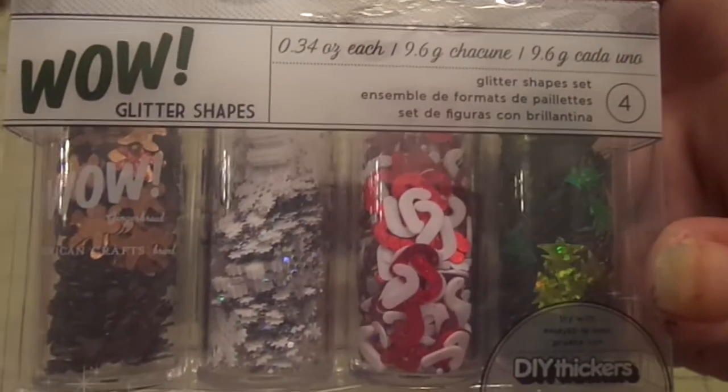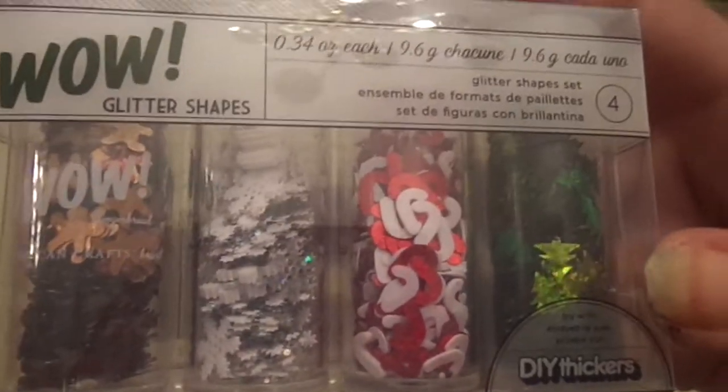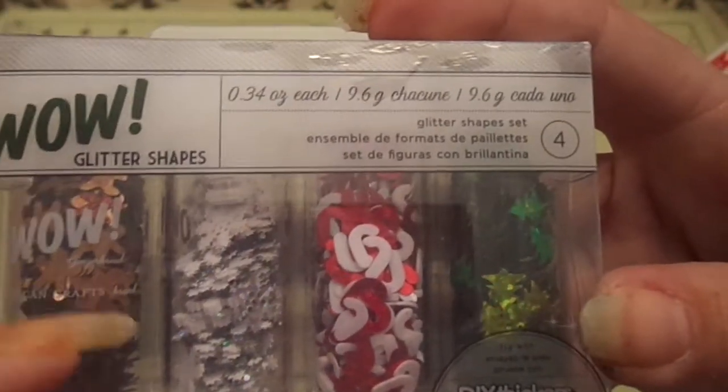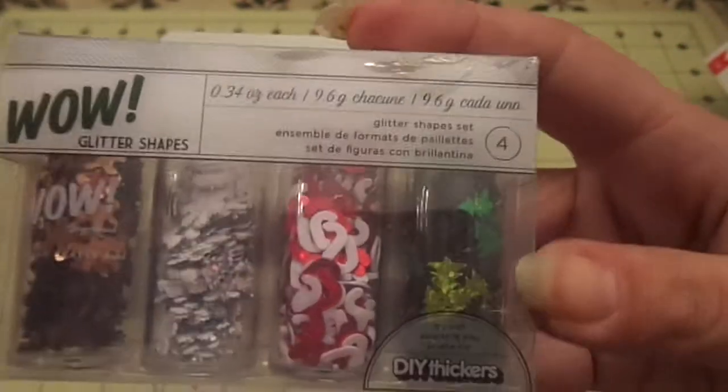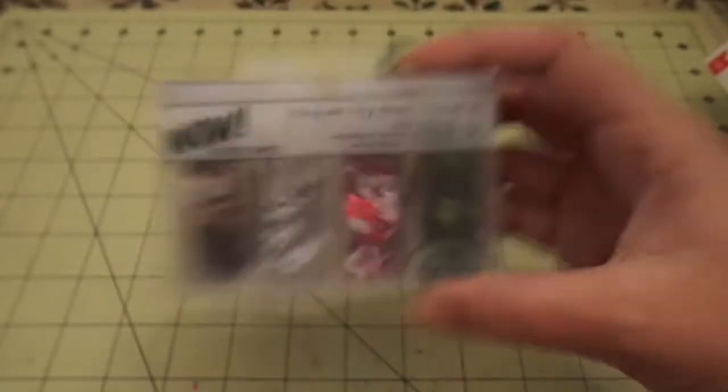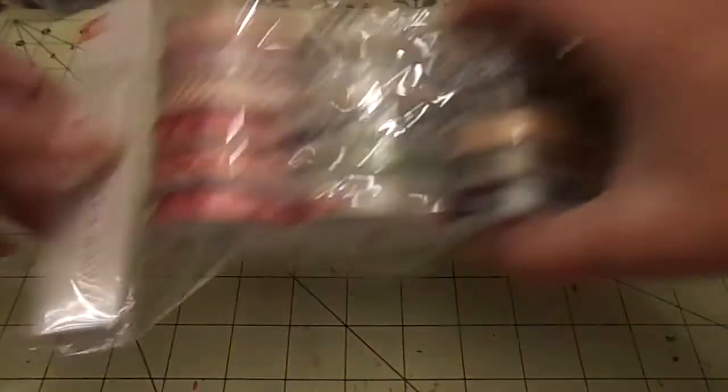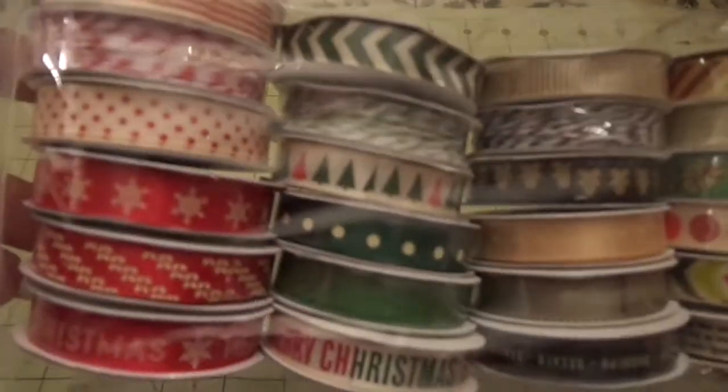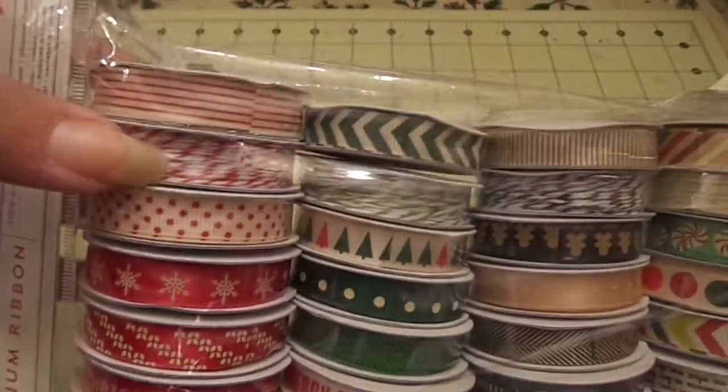Then the other fun stuff. I found one of these wow glitter shapes. I thought they'd be perfect for shaker cards. You get gingerbread men, snowflakes, candy canes, and trees. And this was $2.99. I got the American Crafts Christmas ribbon. And you also get twine.